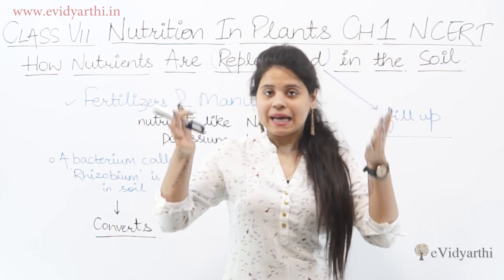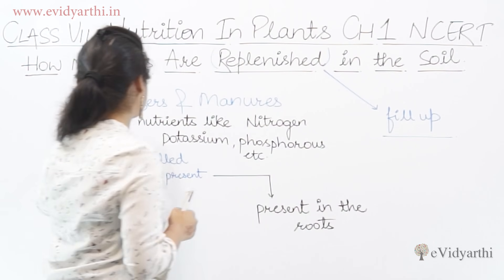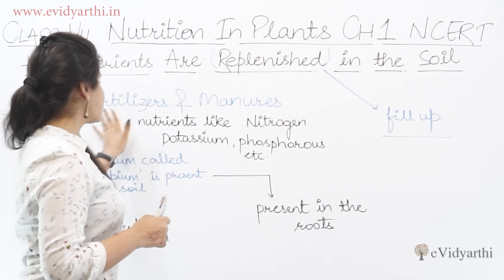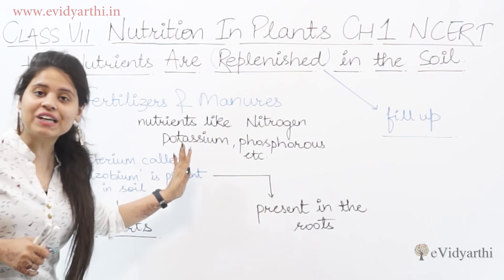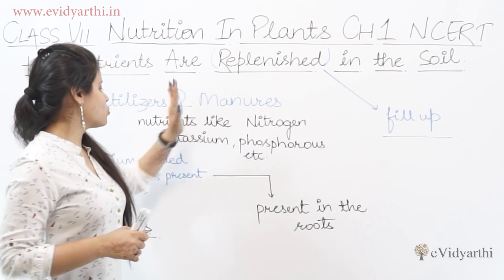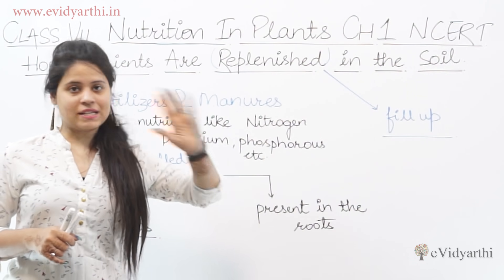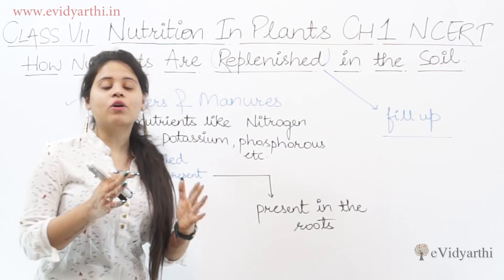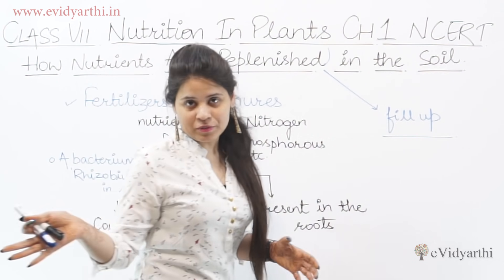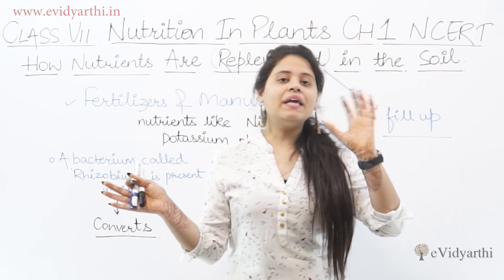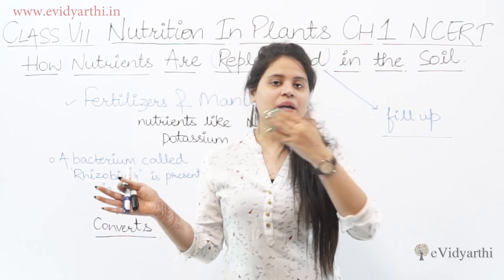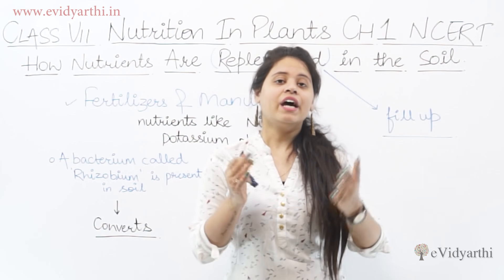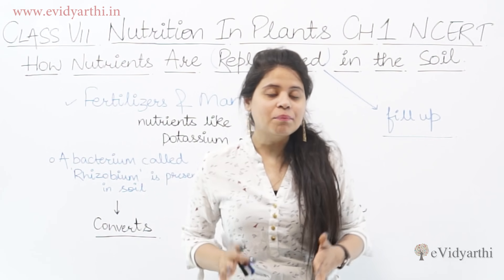To replenish nutrients, we have fertilizers and manures. Fertilizers and manures contain nutrients like nitrogen, potassium, and phosphorus. Farmers use fertilizers and manures in their plants and crops so that the nutrients in the soil are not reduced.